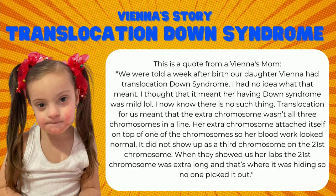For those listening along and not reading, I'm going to read this quote from Vienna's mom. Vienna has translocation Down syndrome. She said: 'We were told a week after birth our daughter Vienna had translocation Down syndrome. I had no idea what that meant — I thought it meant her having Down syndrome was mild. I know now there's no such thing. Translocation for us meant the extra chromosome wasn't all three chromosomes in a line. Her extra chromosome attached itself on top of one of the chromosomes, so her blood work looks normal. It did not show up as a third chromosome on the 21st chromosome. When they showed us her labs, the 21st chromosome was extra long, and that's where it was hiding, so no one picked it out.'